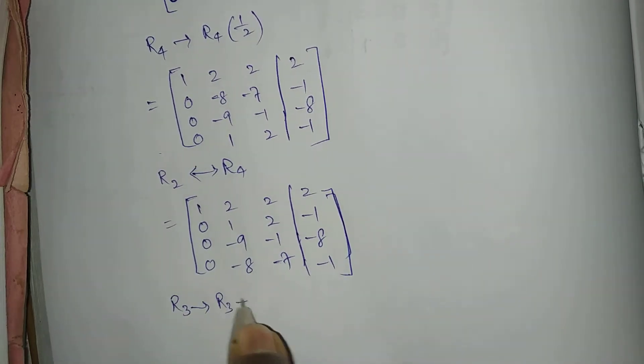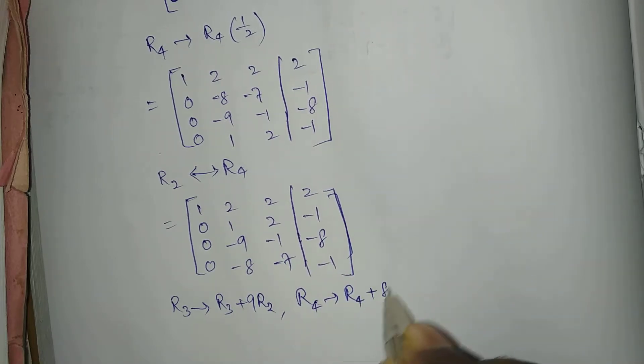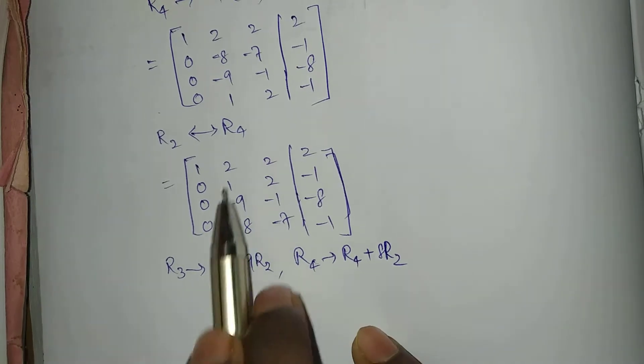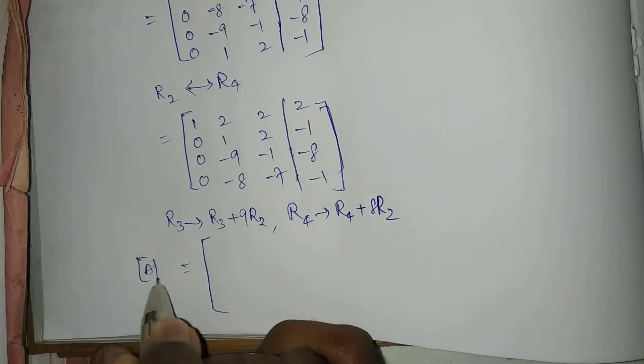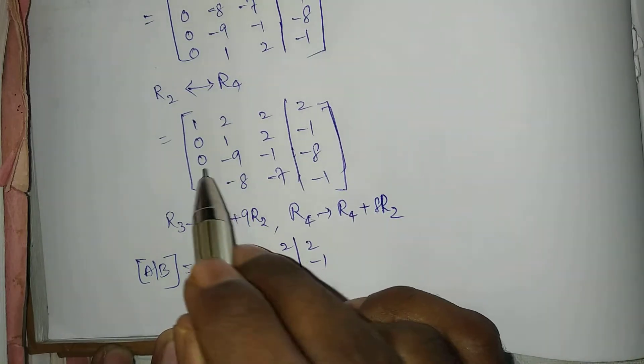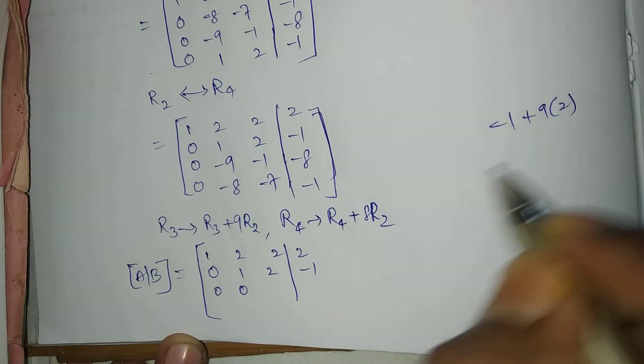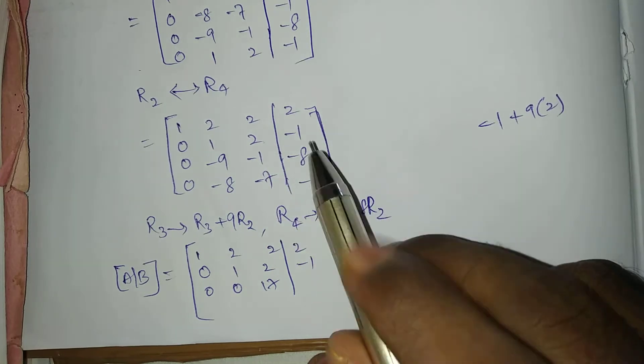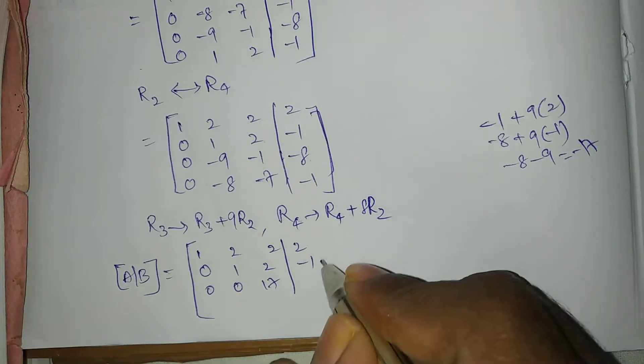R3 tends to R3 plus 9 R2. R4 tends to R4 plus 8 R2. Minus 9 plus 9 is 0, minus 8 plus 8 is 0. For R3: minus 1 plus 9 into 2 is 18 minus 1, that's 17. Minus 8 plus 9 into minus 1 is minus 8 minus 9, that equals minus 17. For R4: minus 7 plus 8 into 2 is minus 7 plus 16, that's 9.